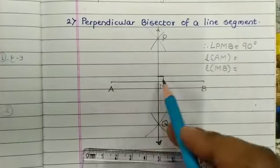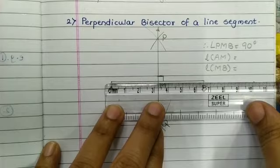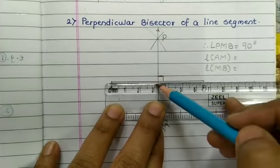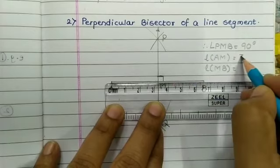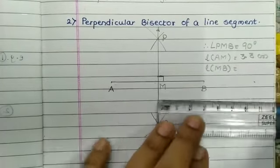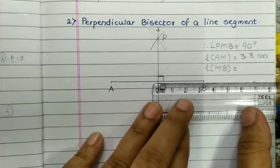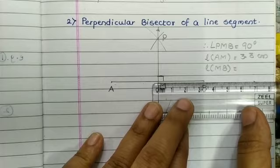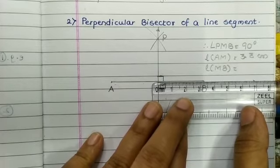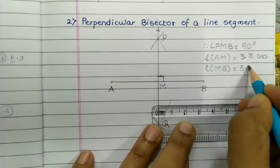Length AM is 3.3 centimeters. Now measure line segment MB. Again, this is 3.3 centimeters. So both segments are equal.